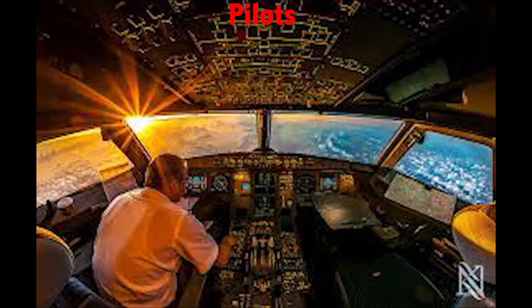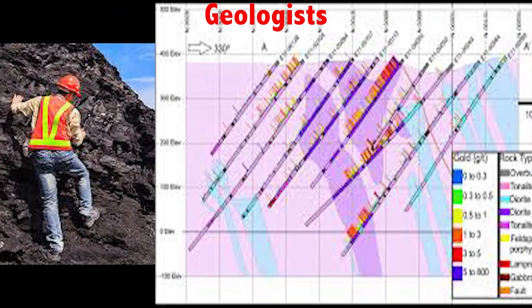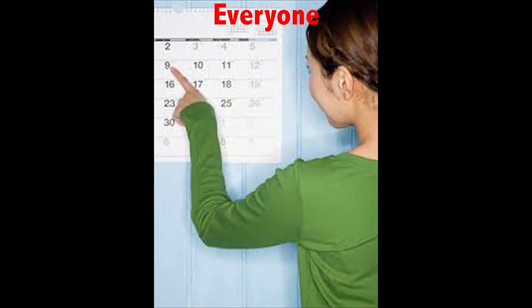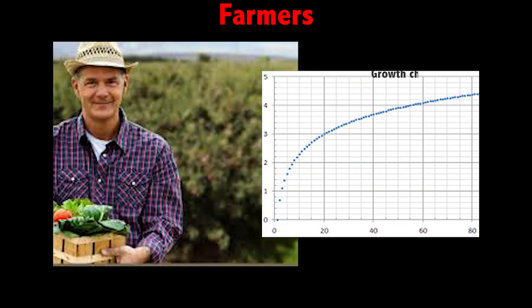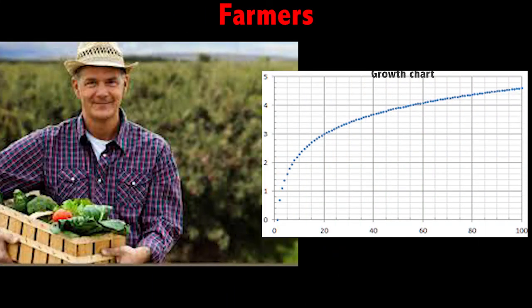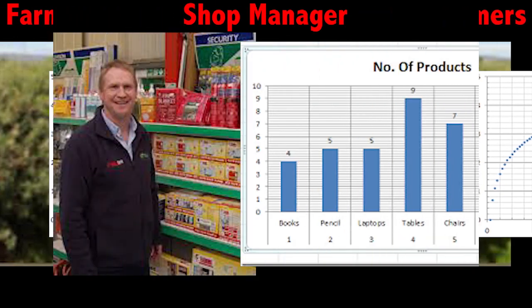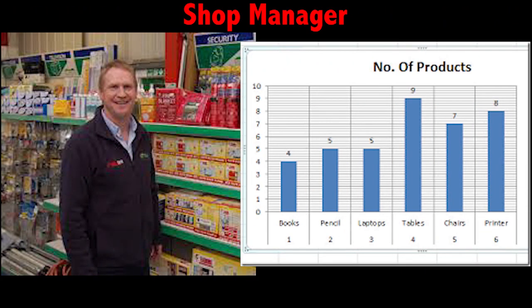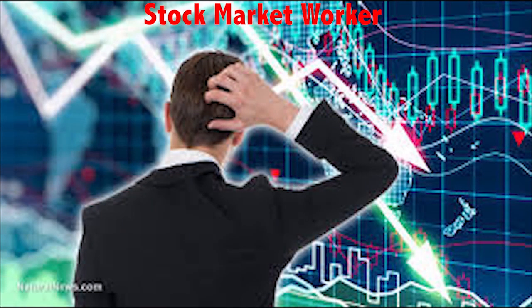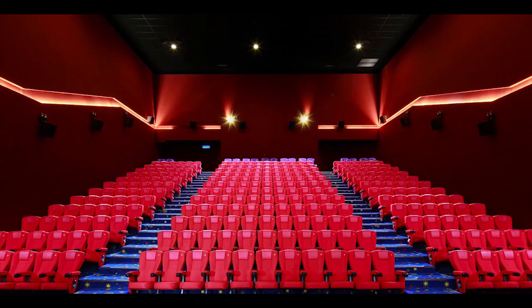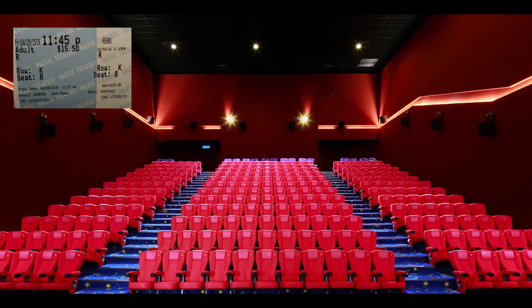People use grid lines in their everyday lives. Pilots use it when they're mapping and direction. Geologists use it in mapping of places. Everyone uses it by reading their calendars. Farmers use it in growth charts and milk production charts. Shop managers use it in items sold and what they should get more of. Stock market workers use it with prices raising and falling.